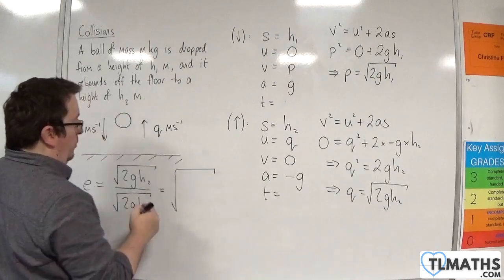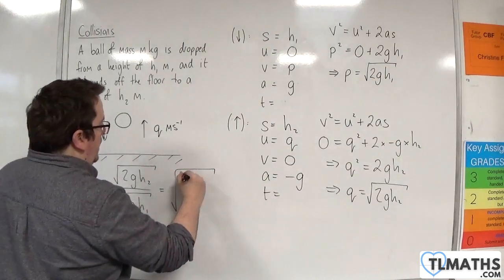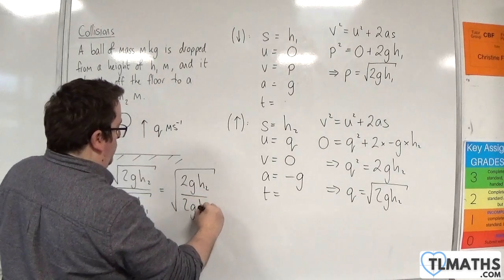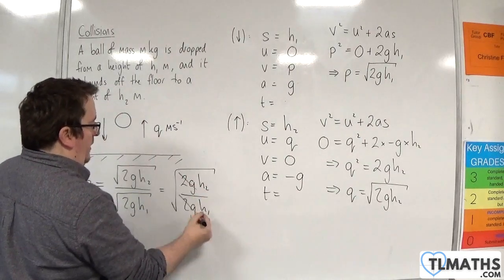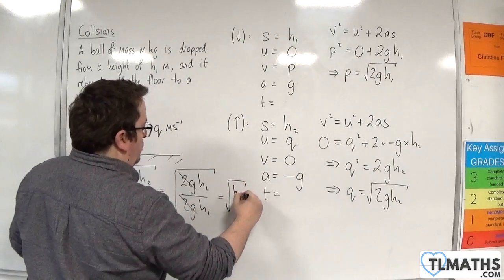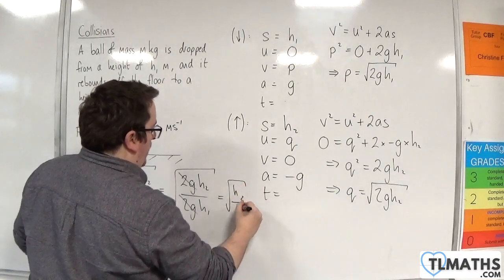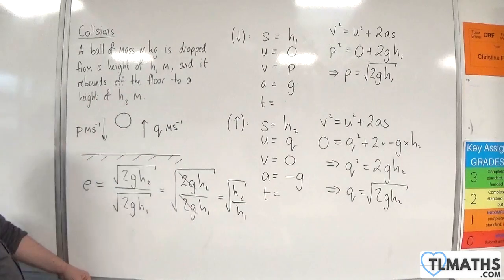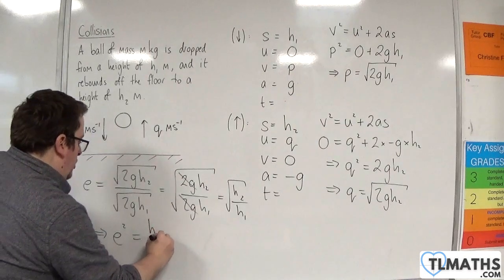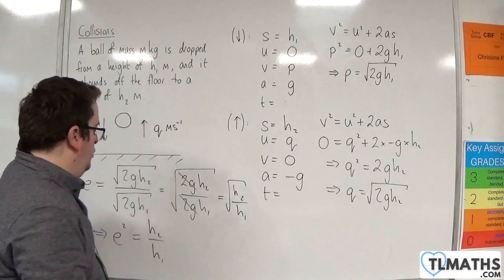Now we can write that in a single square root. And we'll have 2gh2 over 2gh1. And of course the 2g's can cancel. So that will be the square root of h2 over h1. Alternatively you can write that as e squared is h2 over h1.